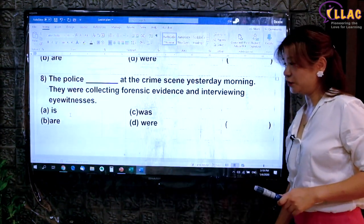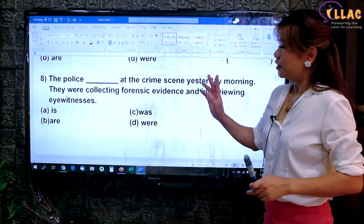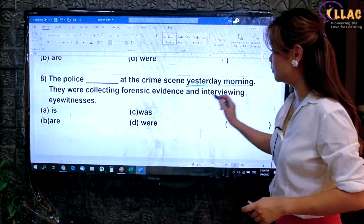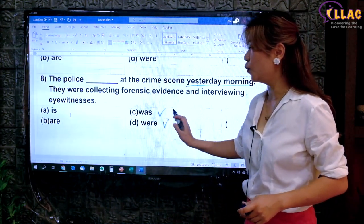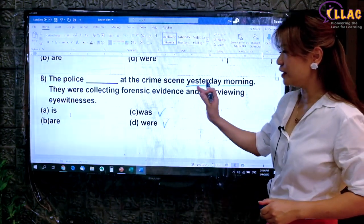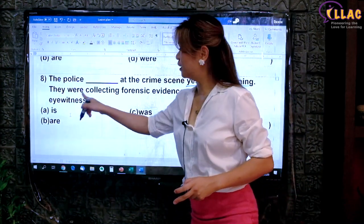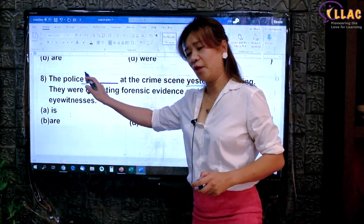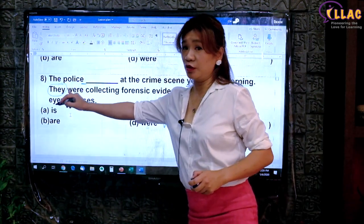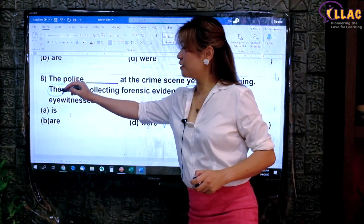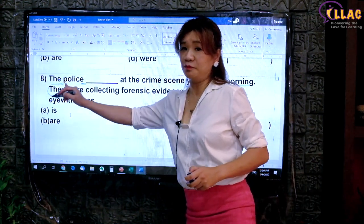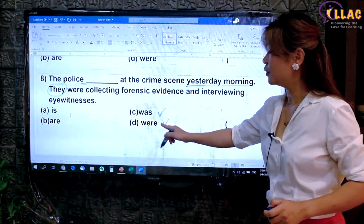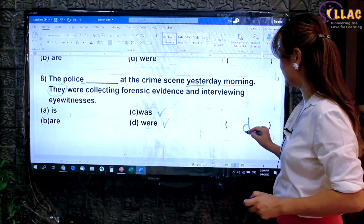Next question. You may pause the video to try this on your own. 'The police at the crime scene. Yesterday morning.' Straight away, we see 'yesterday morning' — past tense. 'Was' or 'were'. The police has no S, so by default it seems singular. However, the pronoun used is 'they were collecting', referring to the police. Therefore the police becomes a plural subject. A plural subject comes with a plural verb — in this case, 'were' is the plural past tense to use here.